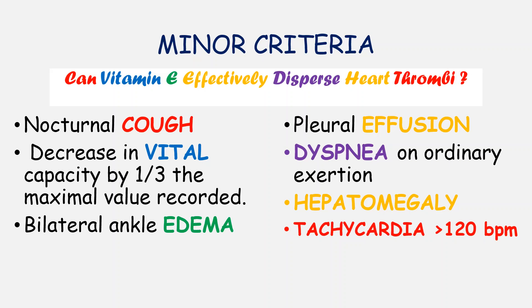Let's summarize our minor criteria: C for nocturnal cough, V for a decrease in vital capacity by one third the maximum value recorded, E for bilateral ankle edema, E for pleural effusion, D for dyspnea on ordinary exertion, H for hepatomegaly, and T for tachycardia. To diagnose heart failure using minor criteria, there must be at least one major criterion plus at least two minor criteria — the minor criteria alone are not enough.